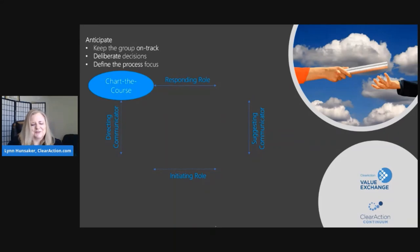The combination of directing and responding is called chart the course. Your pressing need is to anticipate, and your aim is to get a desired result. Your core belief is that it's worth the effort to think ahead to reach the goal. You would say, I have faith in the process to get us there. You're inclined to keep the group on track and make deliberate decisions. You're focused on defining the process, and your natural talent is to conceptualize an end result, foresee how people will respond, figure out what needs to be done, monitor progress, and give guidance.